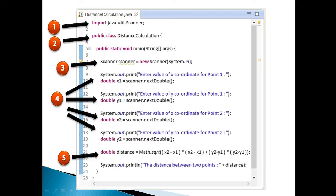Moving ahead, prompt the user to enter value of x coordinate for Point 2. Create a double variable x2. Using Scanner class nextDouble() method, take user inputs for the value x2 and assign it to x2 variable. Moving ahead, prompt the user to enter value of y coordinate for Point 2. Create a double variable y2. Using Scanner class nextDouble() method, take user inputs for the value y2 and assign it to y2 variable.